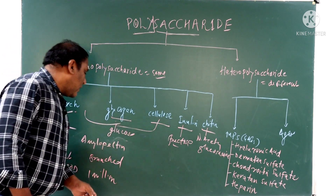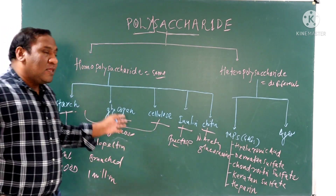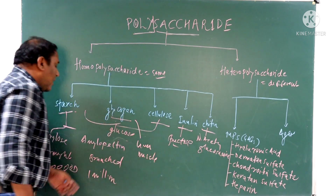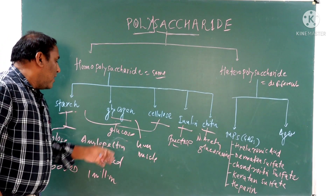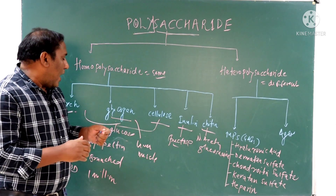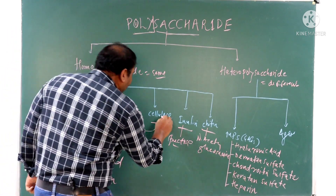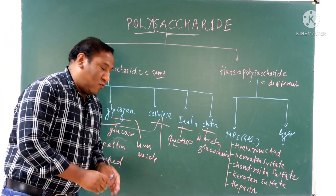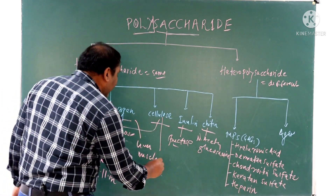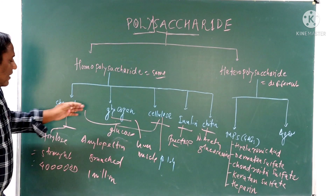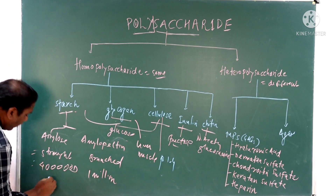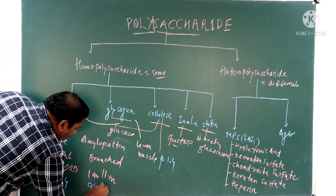Glycogen is the storage form of carbohydrate in animals, mainly stored in the liver and muscle. It also contains amylose and amylopectin parts, but glycogen is a more complex structure with a molecular weight of more than five million. Cellulose is a homopolymer of glucose, but in cellulose the glucose monomers are joined by beta-1,4 glycosidic linkage, whereas in starch the amylose uses alpha-1,4 and amylopectin uses alpha-1,6 glycosidic linkage.